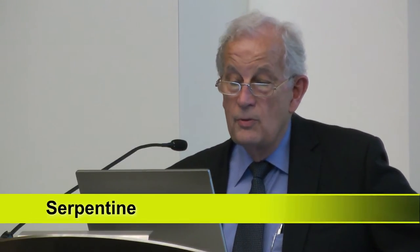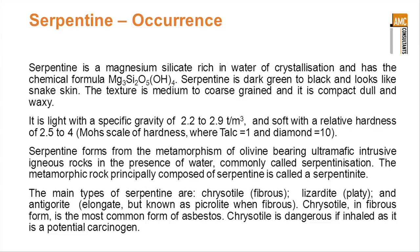It's formed by metamorphism of an olivene-bearing ultramafic rock. So we had metamorphism of limestone to produce marble; we've got metamorphism of ultra-basic rock with lots of iron and magnesium minerals in it, in the presence of water, to produce this serpentine mineral in a rock called serpentinite. And not surprisingly, the process of that metamorphism is called serpentinization.